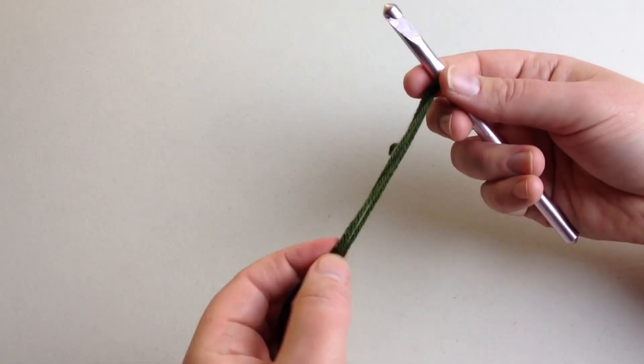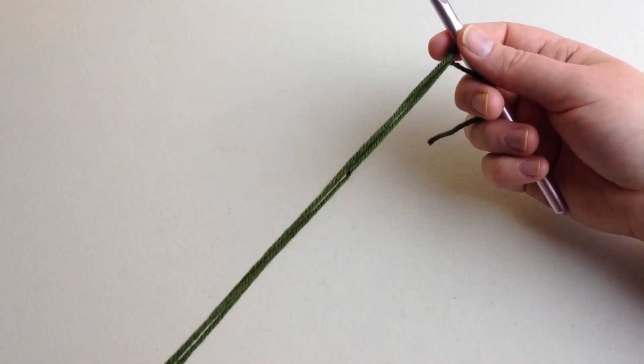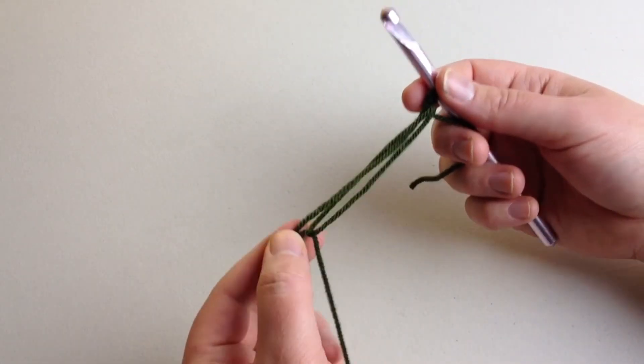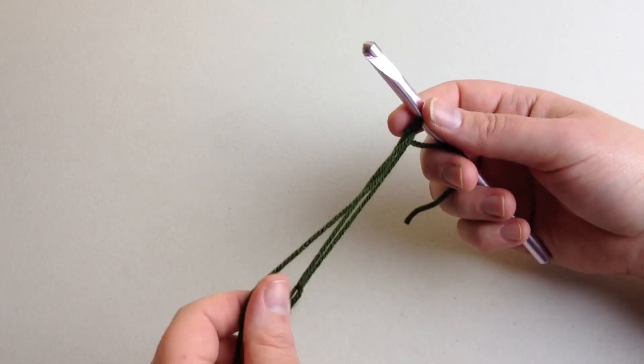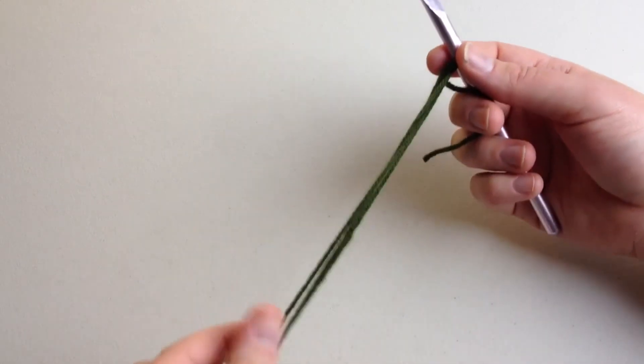Especially if it's all a single color or variegated where it doesn't matter, or a self-striping yarn. I can't guarantee what's going to happen, but it does work really well if you were trying to make dishcloths or potholders with variegated yarn.